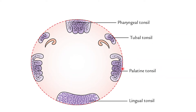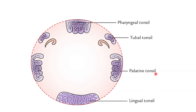The lateral wall of Waldeyer's ring is contributed by the tubal tonsil and the palatine tonsil. The palatine tonsil is present along the lateral wall of the oropharynx, and the tubal tonsils are seen along the lateral wall of the nasopharynx, adjacent to the tubal elevation. So the roof is formed by the pharyngeal tonsil, the floor by the lingual tonsil, and laterally it is completed by the tubal and palatine tonsil.